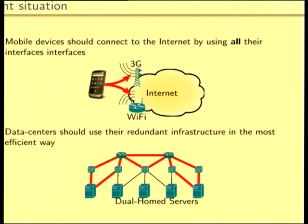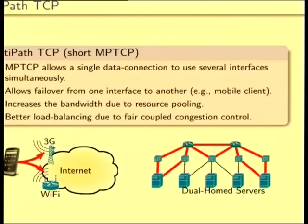With TCP nowadays, you would have to restart the connection. And also, if you could use all the interfaces available, data centers would benefit a lot too. At the IETF, there's a solution being standardized: it's Multipath TCP. Multipath TCP allows you to use several interfaces for the same data connection, pooling all your resources for potentially higher bandwidth and failover capabilities.